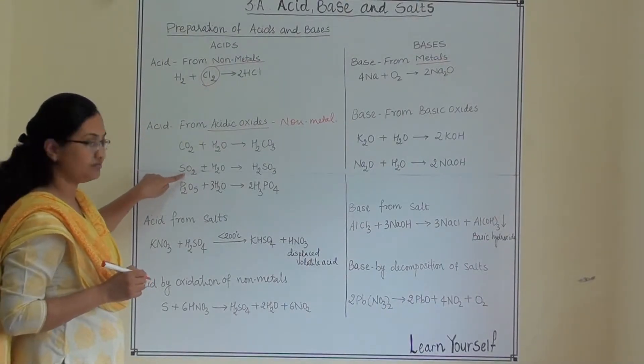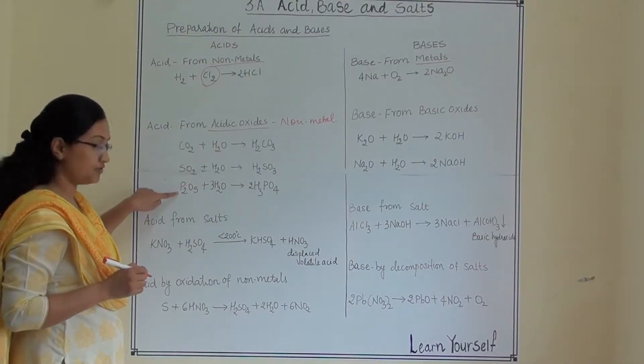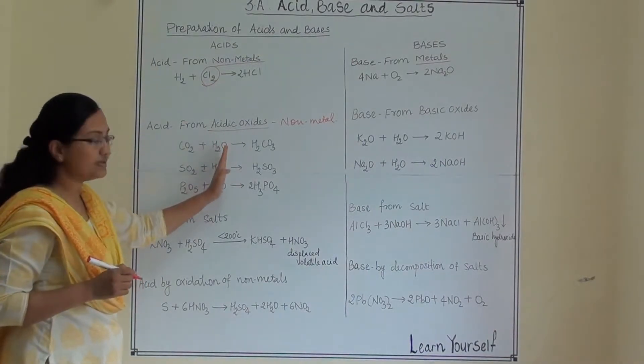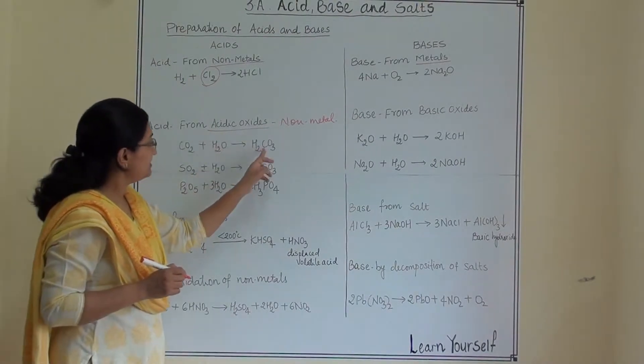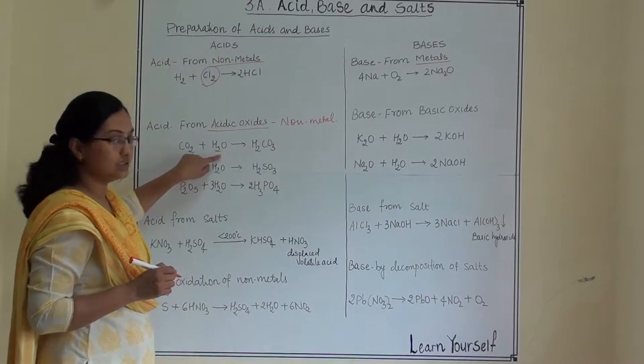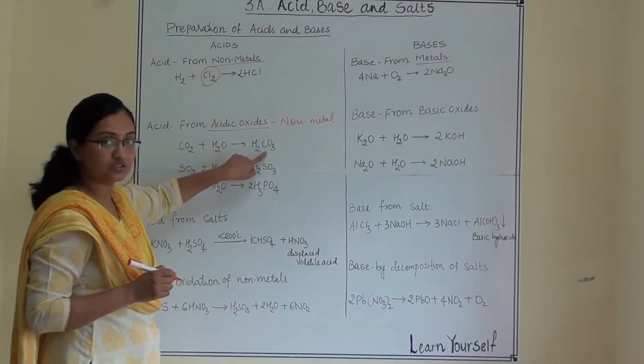Sulphur's oxide, sulphur dioxide. Phosphorus oxide, phosphorus pentoxide. Dissolving water. When they are dissolved in water it gives us sulphuric acid. Carbon dioxide plus water it gives us carbonic acid.